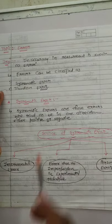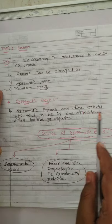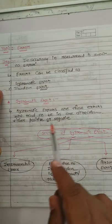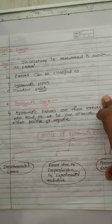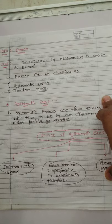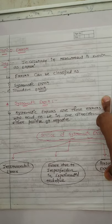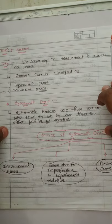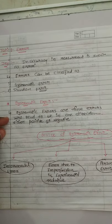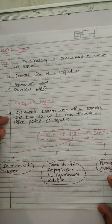Now, what is systematic error? Systematic errors are those errors which tend to be in one direction — either positive or negative. We have two directions: positive and negative. Systematic error means the error is in just one direction. If it is positive, then all errors are in the positive direction; if negative, then all are in the negative direction. This is called systematic error. Now we will talk about the sources of systematic error.